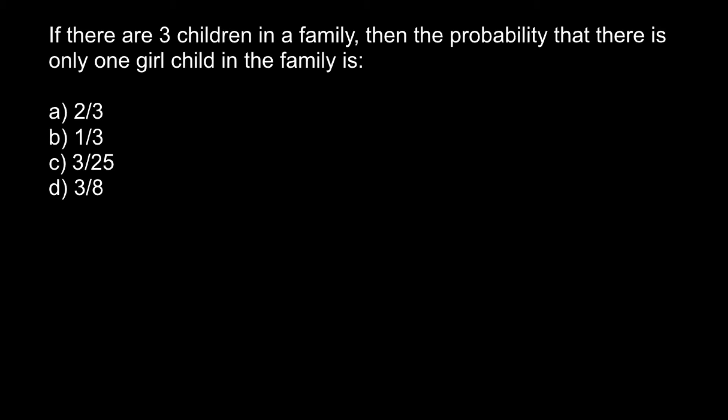Hello and welcome to Nikolai's genetics lessons. Today I got a question from one of my subscribers. Here is a problem: If there are three children in a family, then the probability that there is only one girl child in the family is, and you have to choose the correct answer.